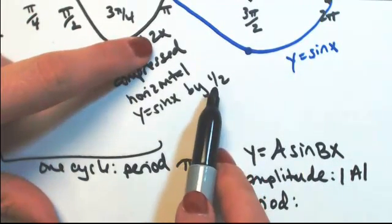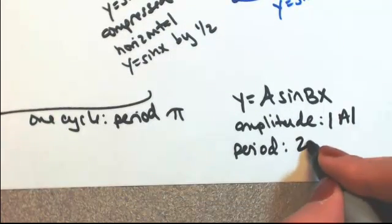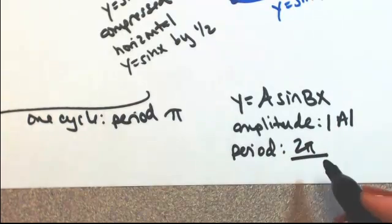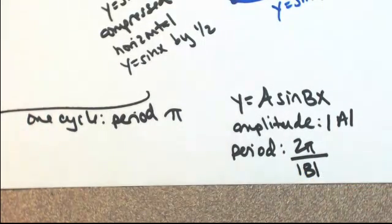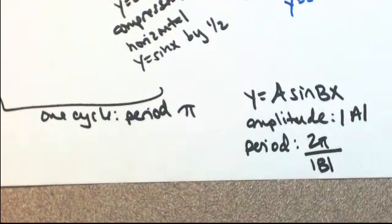And then the period, whatever b is, in this case was 2, is going to be whatever that was divided by 2. So in other words, it's going to be the original period, which is 2 pi, divided by whatever b is. And let's again make that positive. So that's going to be our new period for y equals sine bx.